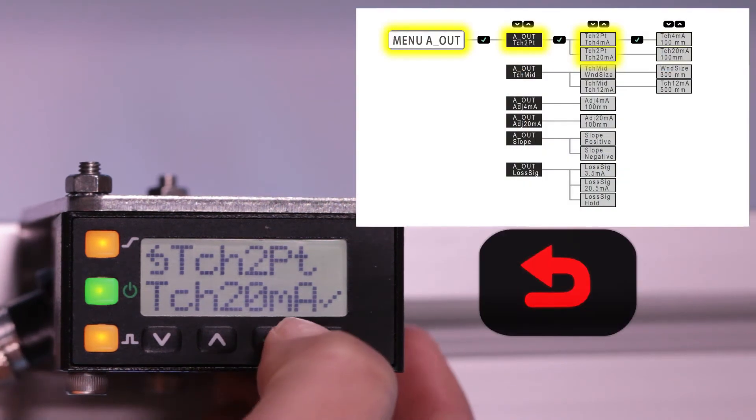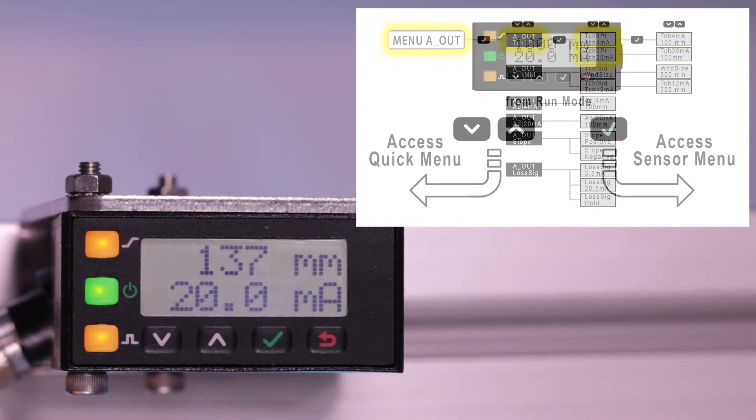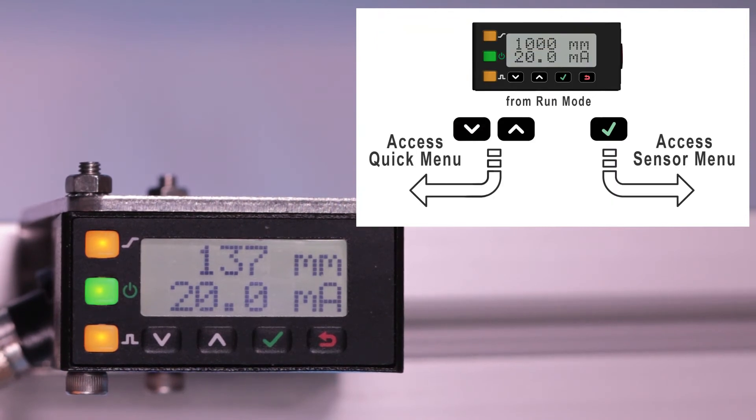Holding back will return to the Run screen. While clicking Enter from this screen provides access to the complete sensor menu, the arrow buttons lead to the Quick menu.